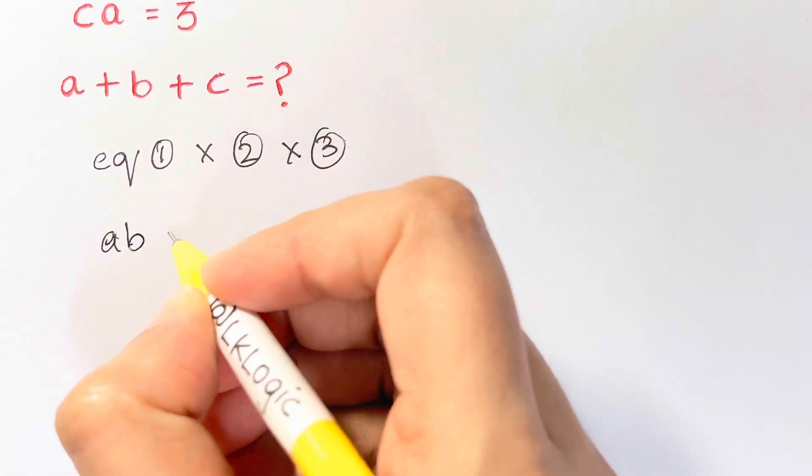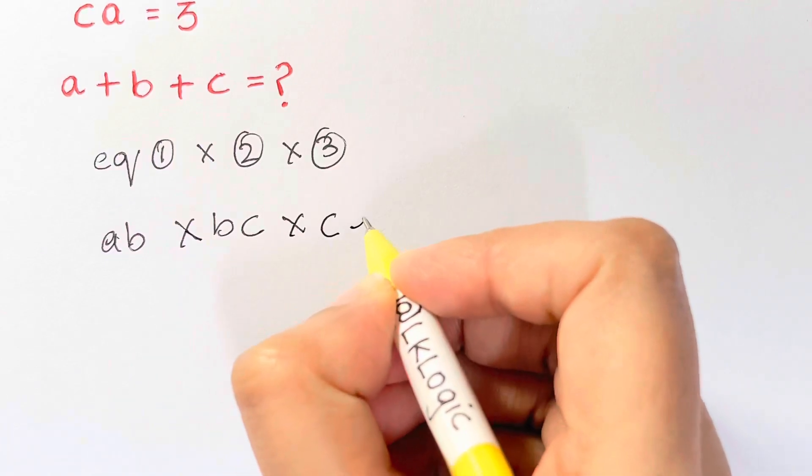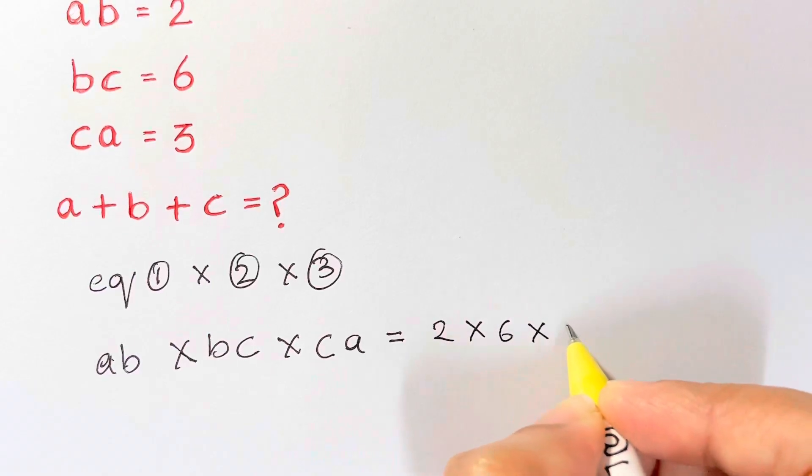So when we multiply, that's AB times BC times CA equals, what are the values given? AB is 2 times BC, 6 times 3.